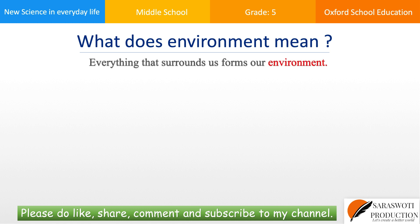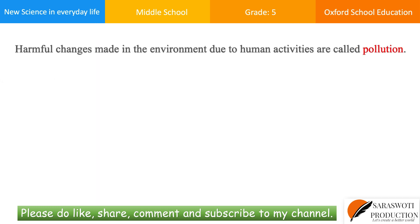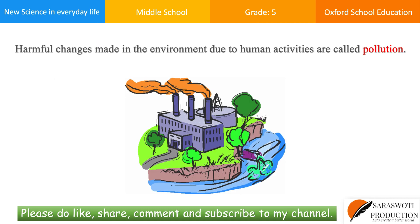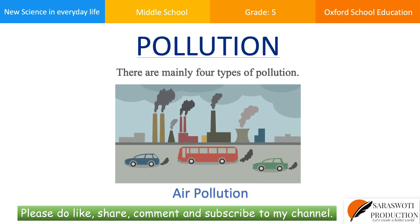Everything that surrounds us forms the environment. Over the years, human activities have made several harmful changes to the environment. Harmful changes made in the environment due to human activities are called pollution. There are mainly four types of pollution.